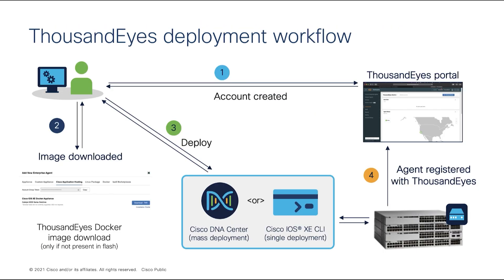Now let's look at how to deploy the ThousandEyes Enterprise agent on the Catalyst 9000 platform. Here is the deployment workflow. We covered step one and step two during the ordering process — all you need to do is step three. Cisco provides multiple deployment options: you can use Cisco DNA Center for large-scale deployments, which manages the application lifecycle with a guided workflow. You can also use CLI or Web UI for single switch deployment. Additionally, we provide a YANG model for do-it-yourself automation. Once successfully deployed, the ThousandEyes Enterprise agent will appear in your ThousandEyes account, and you can start testing for service assurance.